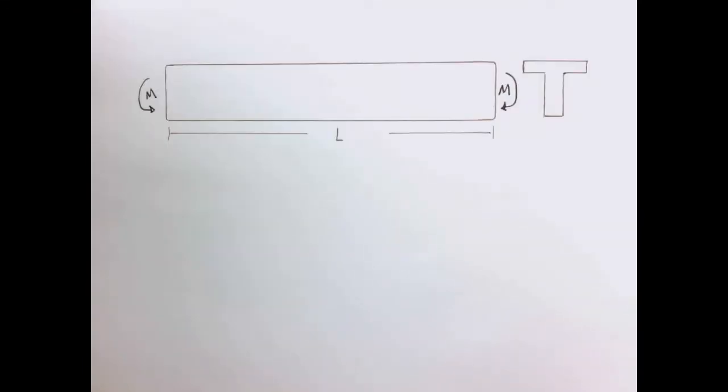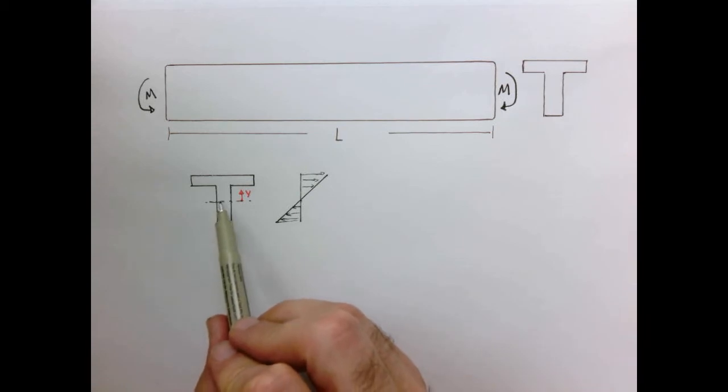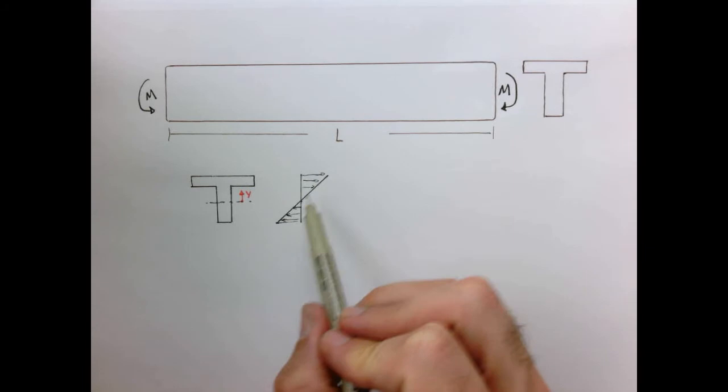Let's analyze what happens now when we have the same beam, but now we have a different cross-sectional shape. So imagine we have some sort of T-like shape instead of the rectangle that we had previously. How does this change our problem? So if we try to copy what we did previously and we set y equals 0 along the center of the beam, we start to see the problem that we might have.